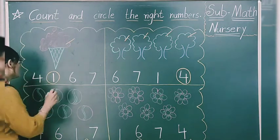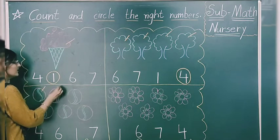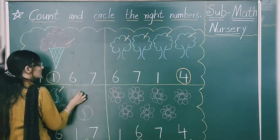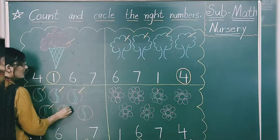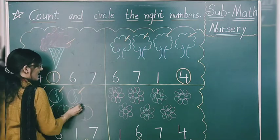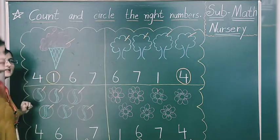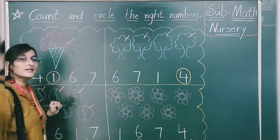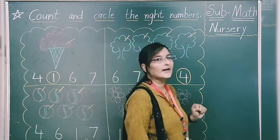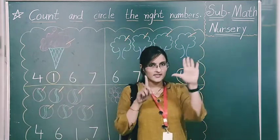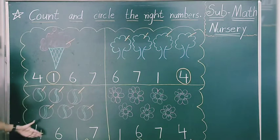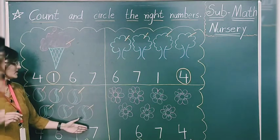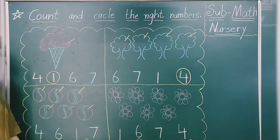Start counting with me: 1, 2, 3, 4, 5, 6. How many balls are here? 6. Now we have to recognize the number 6 from this. What we have to do? Circle.